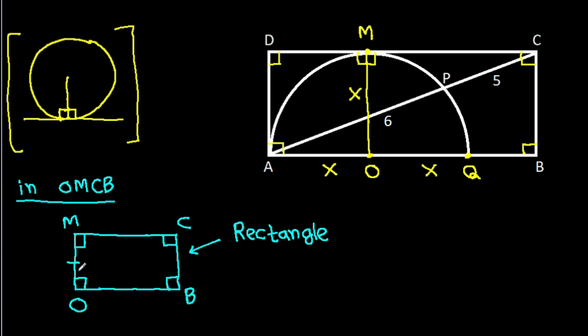So OM will be equal to BC. And OM is X. So BC will also be X. BC is X.